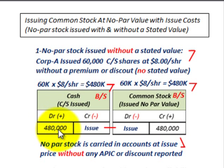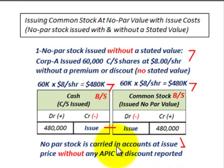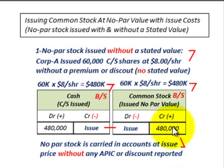So we debit cash for $480,000 and credit common stock for $480,000. The no par stock is carried in the accounts at the issue price without any additional paid-in capital or discount reported. We simply record exactly what we received for that stock, because it has no stated value. All we did is report it exactly at the price we received: 60,000 shares times the $8 share price for $480,000.